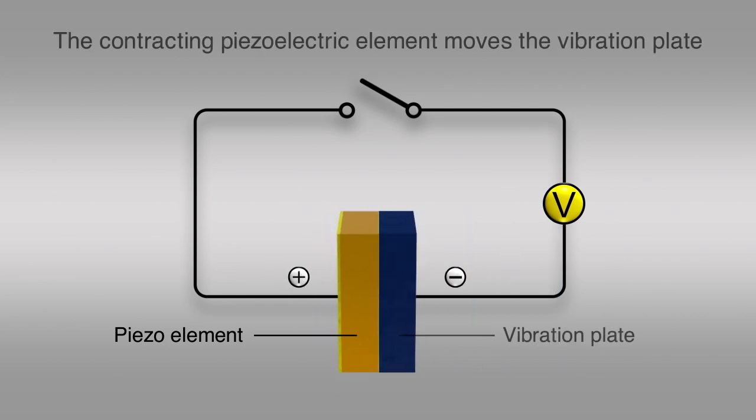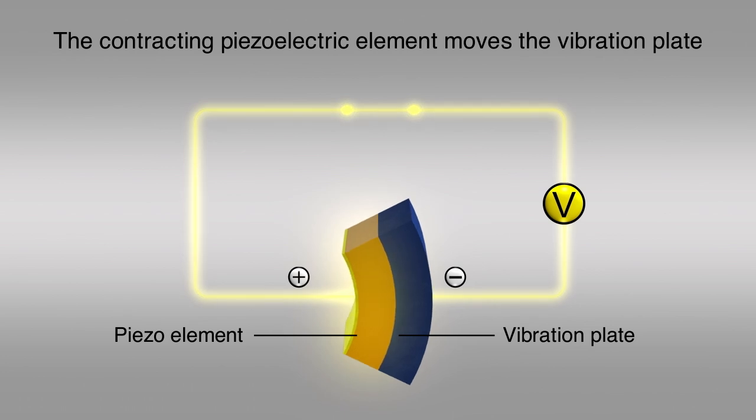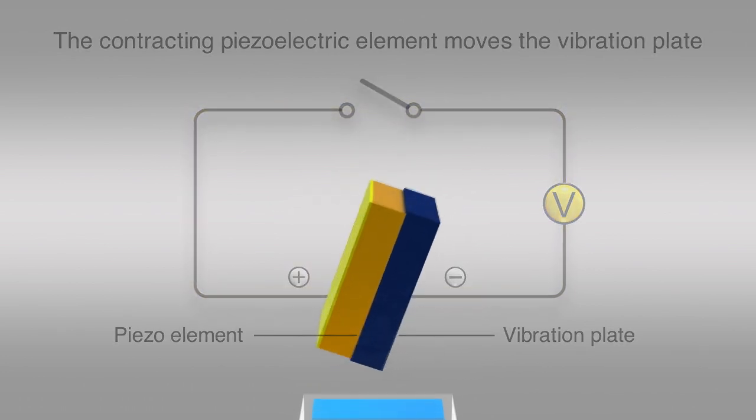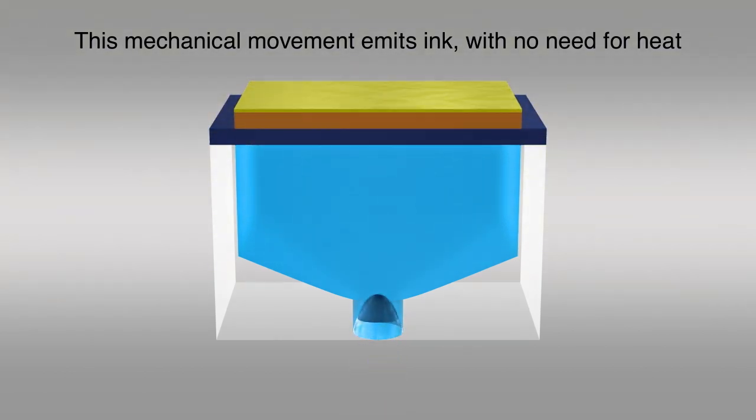Each piezoelectric element is paired with a vibration plate to form a set. The contracting piezoelectric element moves the vibration plate to generate an inkjet mechanically, with no need to heat the ink.